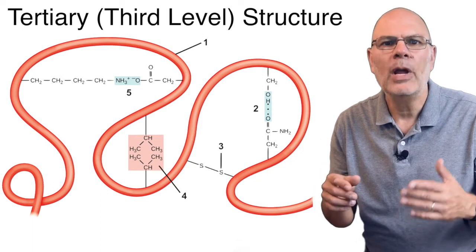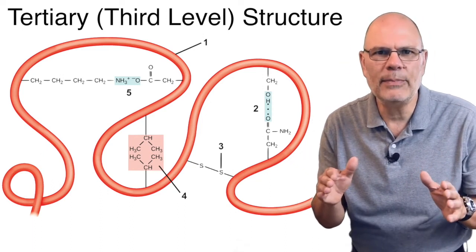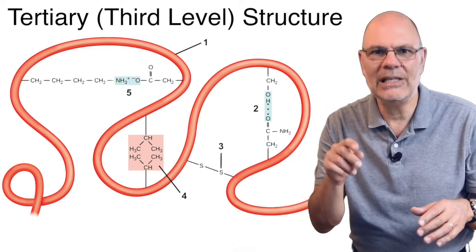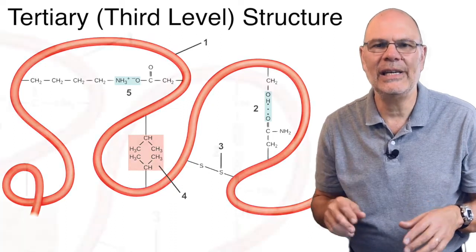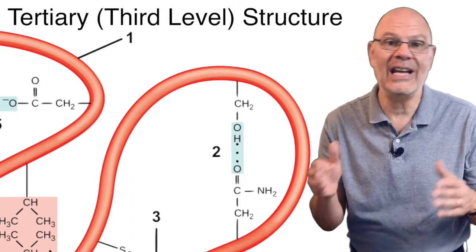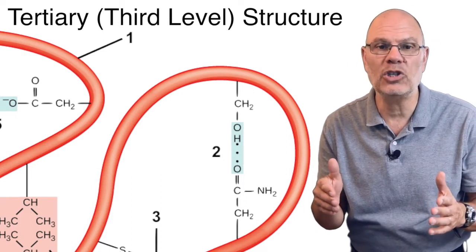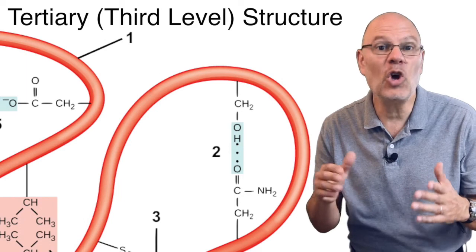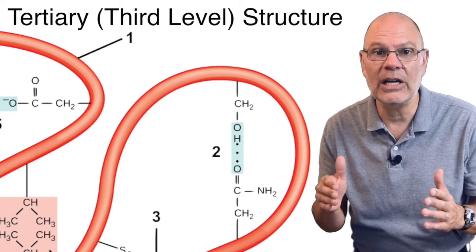In this diagram, number one represents the polypeptide backbone, NCC, NCC, NCC. At number two, a hydrogen bond has formed between two polar side chains that end in functional groups with opposite charges. That hydrogen bond is causing a bend in the polypeptide chain. At three,